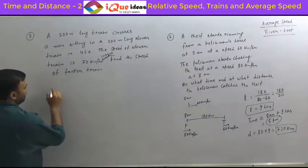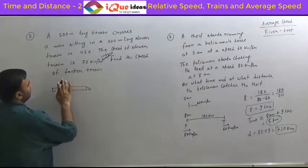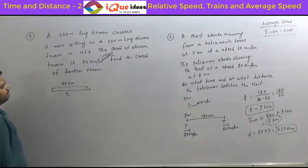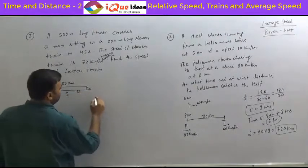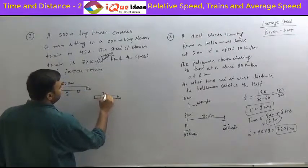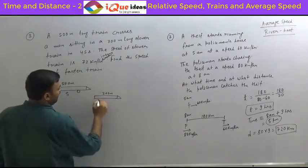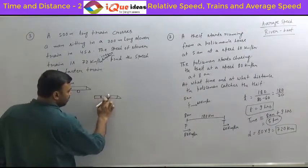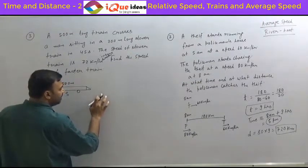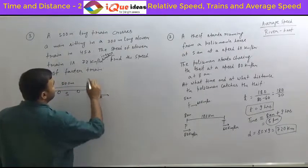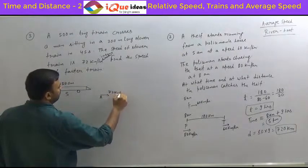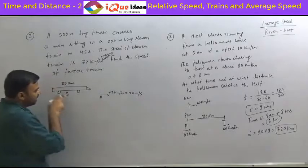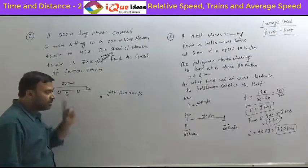Let's understand the situation. There is a fast train with a length of 500 meters and an unknown speed S. Then there is a slower train with a length of 300 meters, and a man is sitting in it. Now, this length of the slower train doesn't matter — the train itself doesn't matter. We only need to consider the man. The speed of the man is 72 km/h, which is 20 meters per second. So basically the man is moving at 20 m/s and the fast train has to cross this man. This is a situation of train and man, not of two trains.